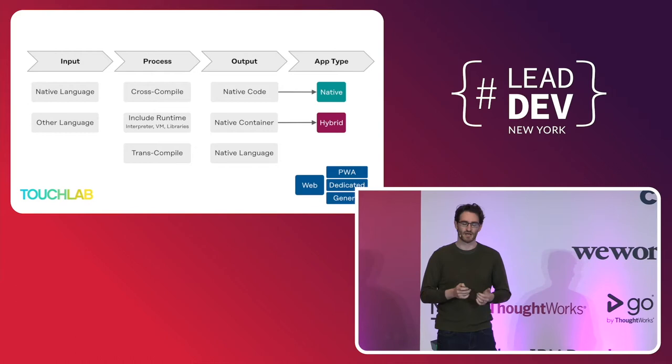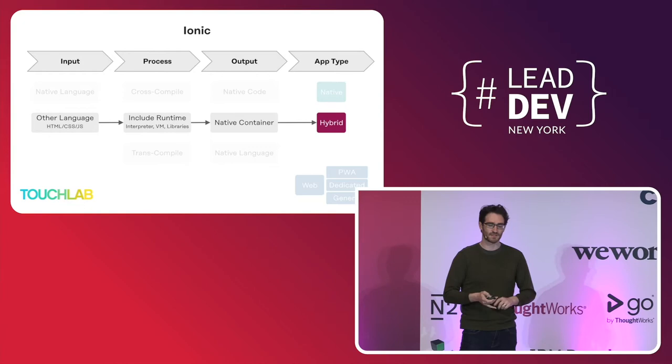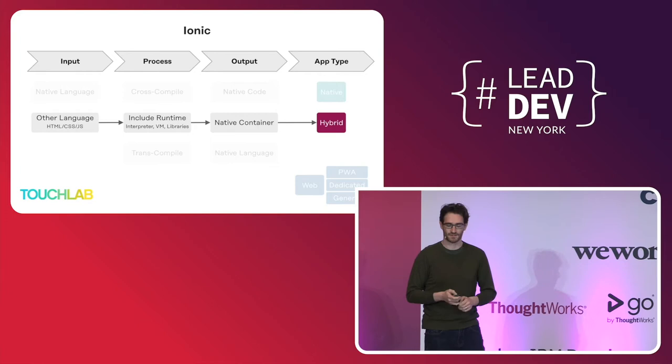With Ionic, you write your app with standard web technologies. The runtime includes your web views and plugins, then everything's wrapped in a native container and you get your hybrid app. Hybrid solutions promise to make things easy, but you need to work really hard to make a hybrid app meet native expectations.